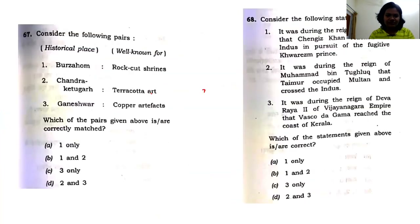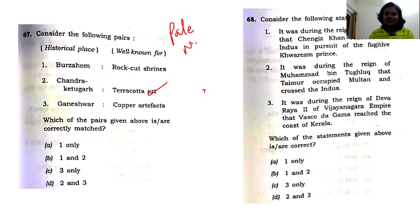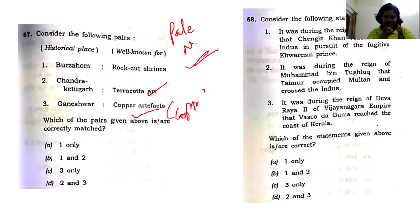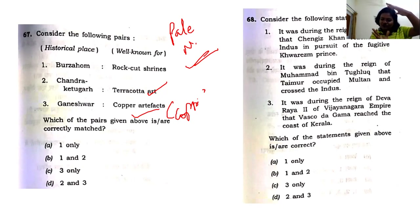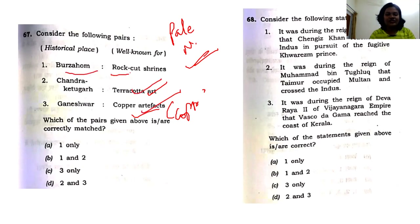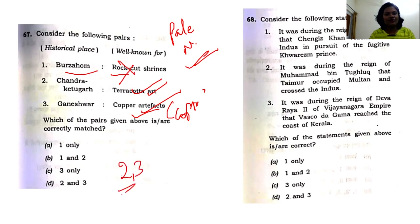Chandraketugarh is in Bengal and is associated with terracotta. This comes from the Paleolithic, Neolithic, and Chalcolithic chapter. Inamgaon has copper artifacts because the copper age came later in Maharashtra, as settlements moved from north to central India — so copper comes in later periods. That statement is also right. But Burzahom is a Neolithic site more famous for pottery rather than rock engravings. So the answer is options two and three.